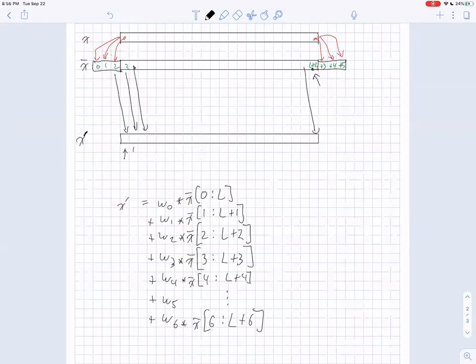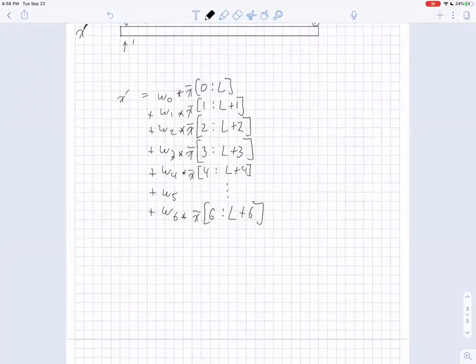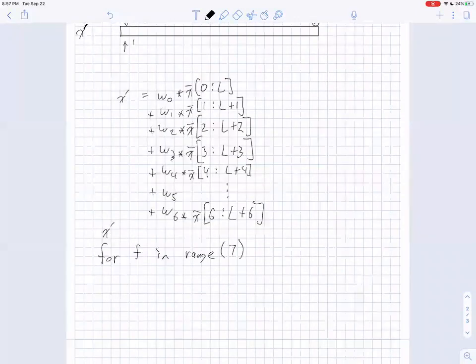So we can write this as one big equation in NumPy. But we can also imagine doing an iteration, but instead of iterating over T, we can iterate over the index of our Gaussian filter. So that becomes something along the lines of for F in range seven. And you'll want X prime to be initialized to zeros. So it's a big vector of zeros and then X prime gets added to each of these terms in order.